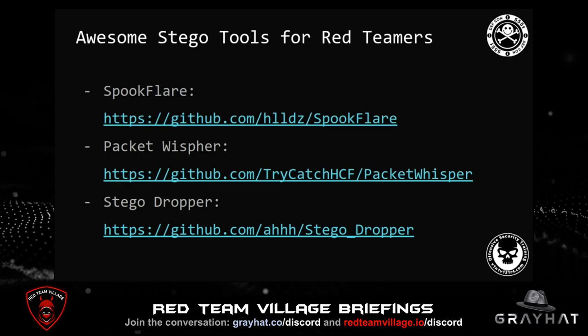Obviously, there is not only PSImage. There are other cool tools that use this technology to help cover up payloads. One of these is PackageWhisper by TriCatch, which was presented at DEF CON 26 — it uses stego to exfiltrate data through DNS queries. We also have StegDropper, which generates stego artifacts with encoded payloads, and Spokeflare, a shellcode dropper generator. You can bypass the countermeasures of the target system like a boss, until they learn the techniques and behavior of Spokeflare payloads.